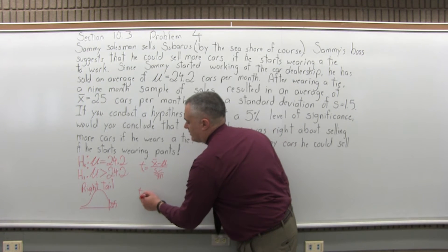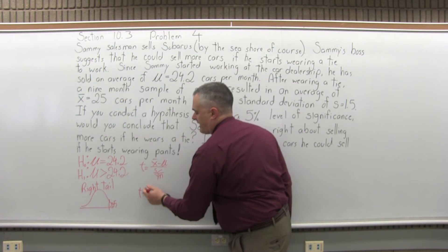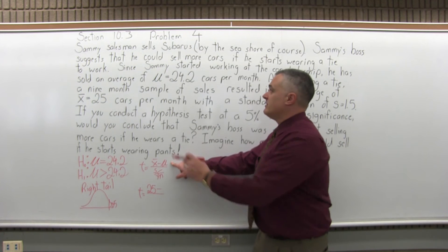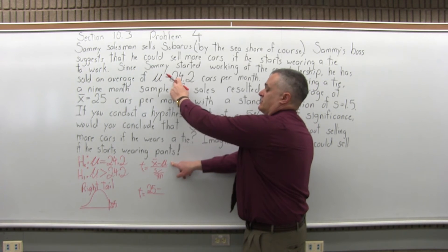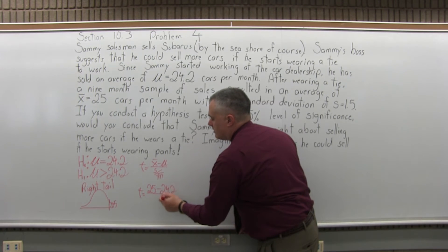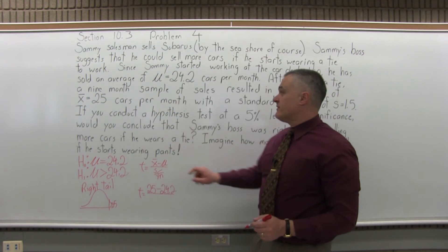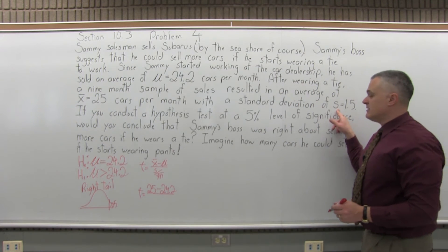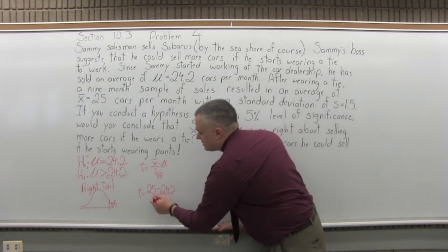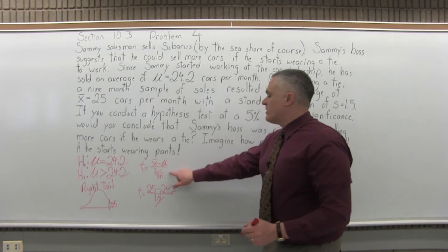So T equals X bar. I can see here X bar is 25 minus mu. The value of mu, the average of the whole population, is 24.2. And then in the denominator, you'll have S over square root of N. S, I have off to the end here, the standard deviation of the sample is 1.5. And that'll be over square root of N.